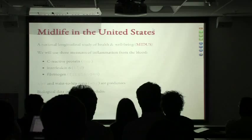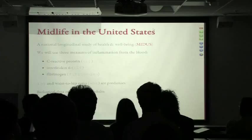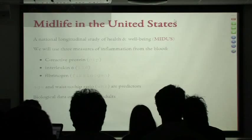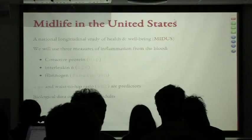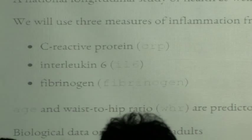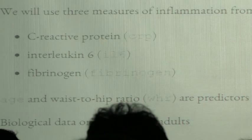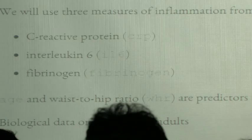I'm going to show some data and models for these problems. The data comes from the Midlife in the United States study — a large multi-site study of about 1200 adults. I'm going to focus on three variables: C-reactive protein, interleukin-6, and fibrinogen. And we have a couple of predictors: age and waist-hip ratio, both previously associated with inflammation. Waist-hip ratio is important because fat cells actually produce more inflammatory cytokines than other cells.